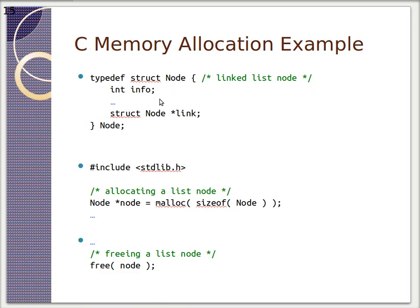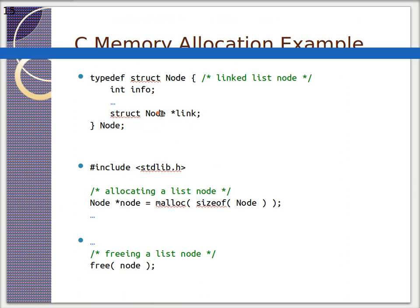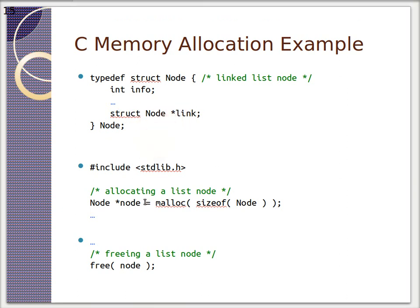So here's an example. We've got a linked list. We've got a node structure. It's got some information in it, maybe some other pieces of data, and then it's got a link to the next node. When we make a new node, we can call malloc on it and we can free it. Unfortunately, if we make a list of size a thousand and then make a list of size a thousand again, we'll have called malloc 2,000 times and free 2,000 times.